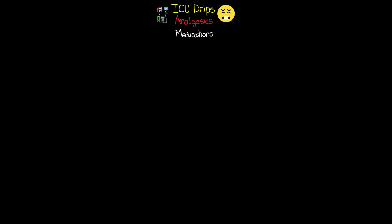We talked about some of these in the last lesson when we covered the pain pathway. For this lesson I'm only going to focus on the ones you're going to encounter in drip form when providing analgesia. When we look at these analgesics in drip form, there are really two primary groups: the first is opioids, and the other group for now we're just going to call other.